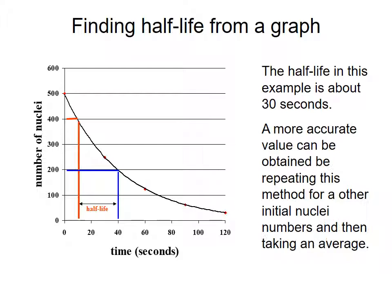You can also find the half-life from a graph, which we've done as an activity. So basically, if 500 is the number of nuclei at the start, you basically go down and say, well, when's it going to halve? So it's going to be at 250, roughly. The half-life is going to be the difference between when the sample is halved, so difference between 400 and 200. There we go. It's got 40 minus 10, so 30 seconds in this particular case. A more accurate value can be obtained by repeating the method with other initial nuclei numbers, and then taking an average.